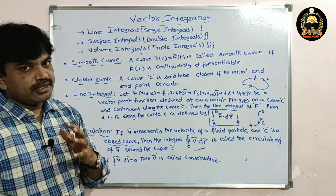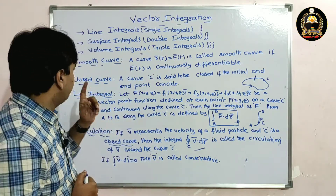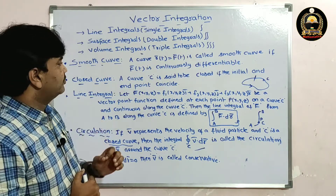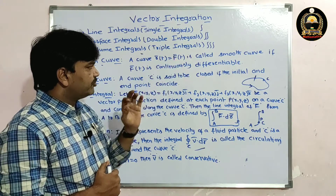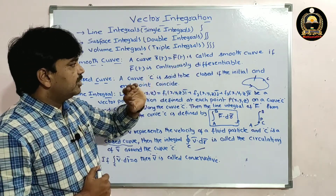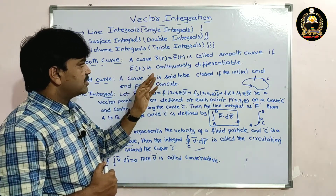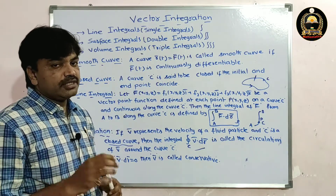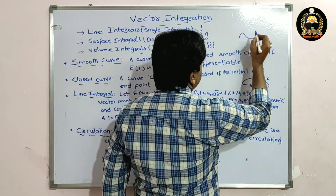Before going to line integration, we need to know some basic definitions. Let us see the smooth curve definition. A curve r̄(t) = f̄(t) is called a smooth curve if f̄(t) is continuously differentiable.